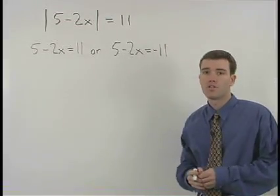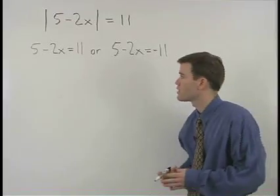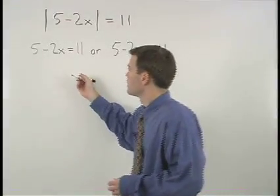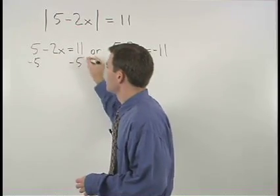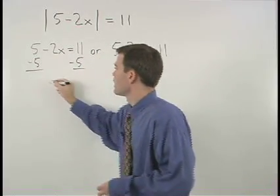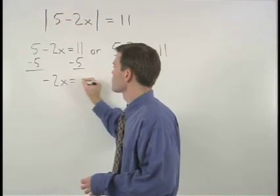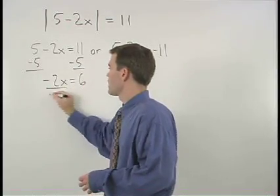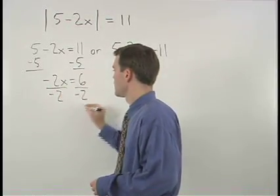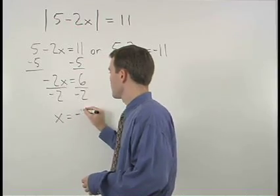Now all we have to do is solve our two equations. On the left, subtract 5 from both sides to isolate the x term and we get negative 2x equals 6. Divide both sides by negative 2 and x equals negative 3.